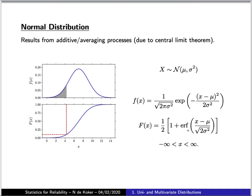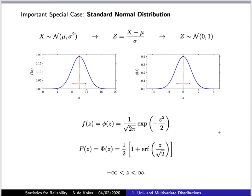To evaluate the probability of a normally distributed random variable, one would numerically integrate the function or use pre-existing numerical evaluations of the error function. A very important special case is the standard normal distribution, where the mean is 0 and standard deviation is 1. One centralizes the random variable by subtracting the mean and dividing by the standard deviation to form a new variable z. Substituting this gives the standard normal probability density function and cumulative density function.